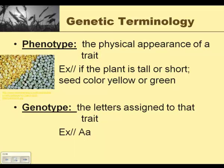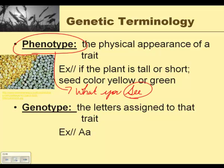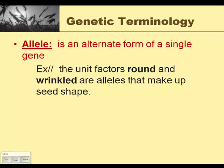Another really important word to remember is phenotype, which means the physical appearance of a trait. For example, if the plant is tall or short, or the seed color is yellow or green — phenotype is what you see. The other way to remember it is P for physical appearance. Genotype refers to the letters that are assigned to that specific trait — we might assign a letter such as A to make it easier to work through different traits. Allele is an alternate form of a single gene. You could have round or you could have wrinkled — each of those is a type of the gene. So the unit factors round and wrinkled are alleles that make up seed shape.